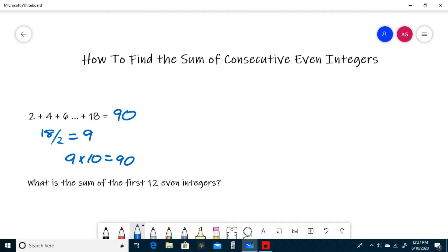For our next example, we are asked for the sum of the first 12 even integers. To do this, I'm going to say that 12 is the same thing as n. So to find the sum, just do n times n plus 1.